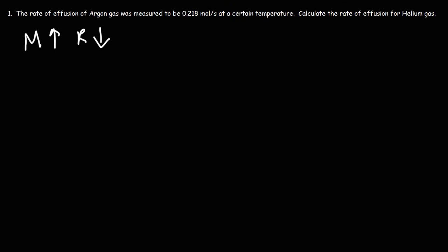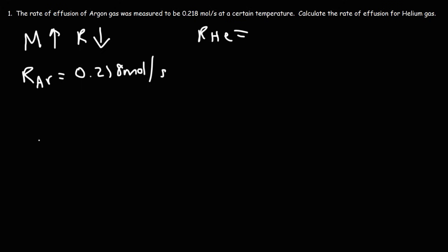Let's focus on this problem. The rate of effusion of argon gas was measured to be 0.218 moles per second at a certain temperature. Calculate the rate of effusion for helium gas. The formula for the rate of effusion is: R2 over R1 is equal to the square root of M1 over M2.